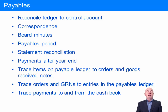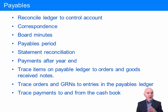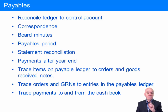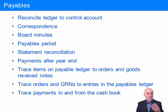First things first, we would reconcile the detailed balances in the ledger — the sum of those — to the control account. The total payables figure doesn't actually exist on its own; it's made up of perhaps several hundred individual payables balances. We have to make sure that the figure in the financial statements, which is a total figure, is actually made up of a number of discrete payables balances, and it's those which we're primarily going to be auditing.